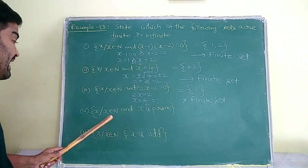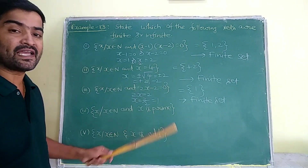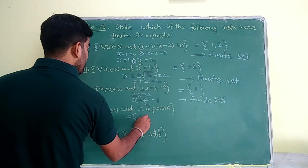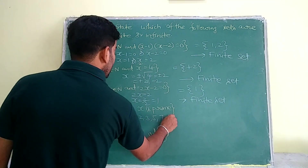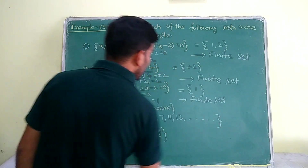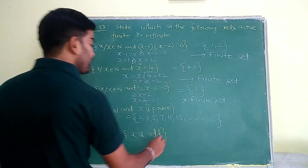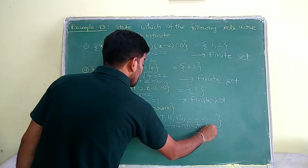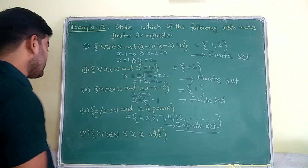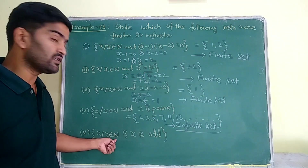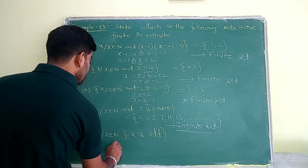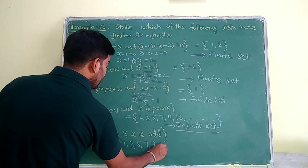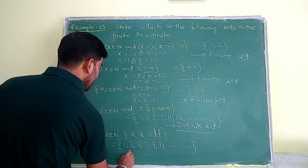Fourth: {x : x ∈ N and x is prime}. Prime numbers are 2, 3, 5, 7, 11, 13, ... and so on. We know prime numbers are infinite, so this is an infinite set. Fifth: {x : x is a natural number and x is odd}. Odd natural numbers are 1, 3, 5, 7, 9, 11, ... and so on — infinite set.